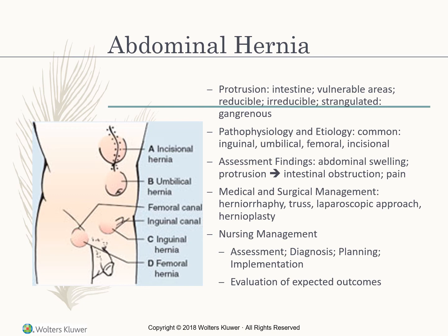Common hernia locations include inguinal, umbilical, femoral, and incisional areas. Assessment findings include abdominal swelling, protrusion, possible intestinal obstruction, and pain. Management includes surgical removal, a supportive brace, or a laparoscopic approach to reinforce the area with wire or mesh. Nursing management focuses on assessing for worsening pain requiring surgery and protecting the area.